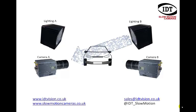Obviously we could raise the lights out of the way of the field of view, but that may well compromise on the quality of the image that we're looking for. As LED lights can be pulsed in sync with the camera, we can set up the lights so that only the desired light forms the image in each camera. So camera A is only lit by lighting A and camera B only by lighting B.